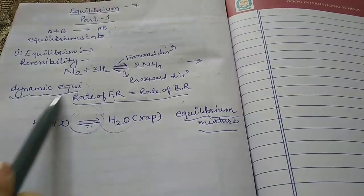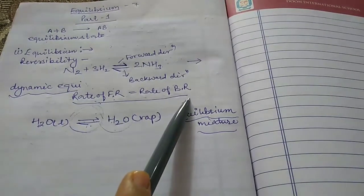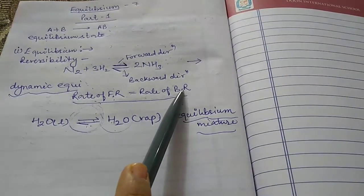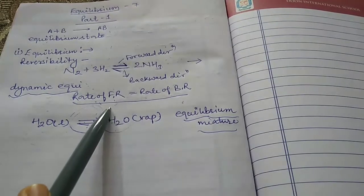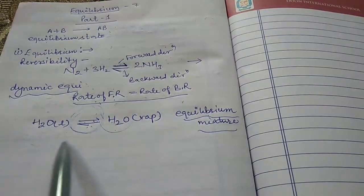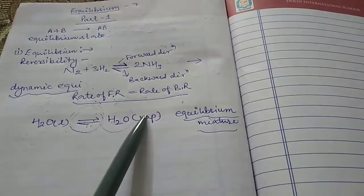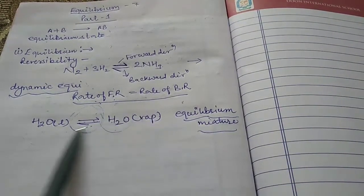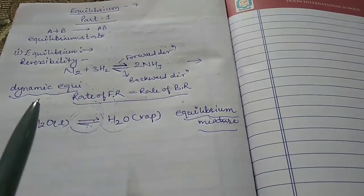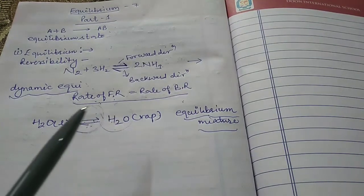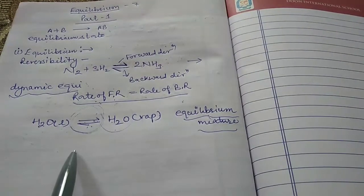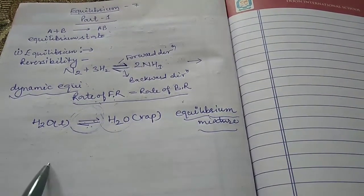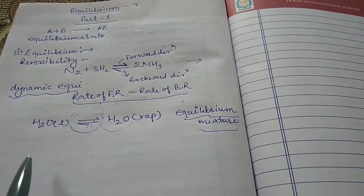The stage of the system is dynamic equilibrium when the rate of forward reaction is equal to the rate of the backward reaction. It is due to the dynamic equilibrium stage that there is no change in the concentration of the various species of the reaction mixture. Based on the extent to which the reaction proceeds, reactions may be classified into various groups. The first group is reactions that proceed nearly to completion, where only negligible concentration of reactant is left.